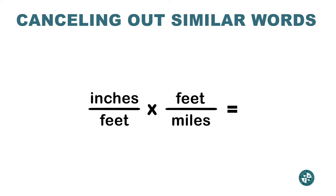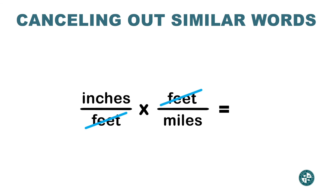For example, between these two fractions, the word in common is 'feet.' I have feet on the top and feet on the bottom — just like we did before with numbers. You can cross out one word on the top and one on the bottom. Then check what word is left on the top and what word is left on the bottom, and write out what you have left.